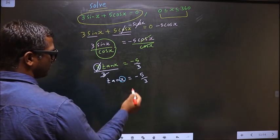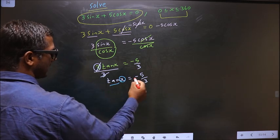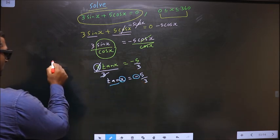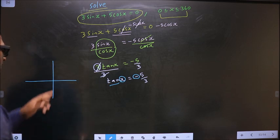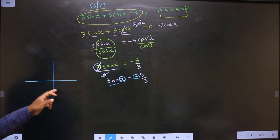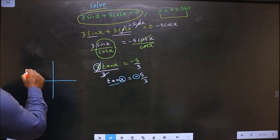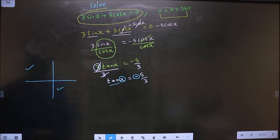Now to get the values for x. Here we have tan and here it is negative. So now you should check: in what all quadrants is tan negative? It is all silver tea cups. So tan is negative in the second and in the fourth.